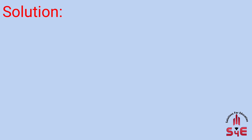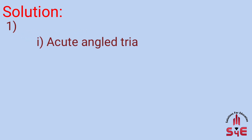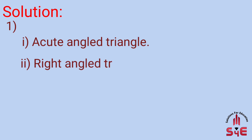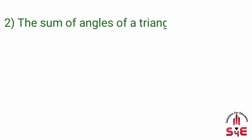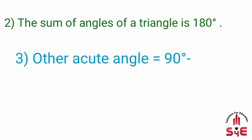Sabhi questions ke solutions aage diye gaye hain. Triangle ki teen types is tarah hongi: first, acute-angled triangle; second, right-angled triangle; and third, obtuse-angled triangle. Ye teeno types angle-based triangles hain. Solution of second question: the sum of angles of a triangle is 180 degrees. Solution of third question: the other acute angle is equal to 90 degrees minus 40 degrees, which equals 50 degrees.